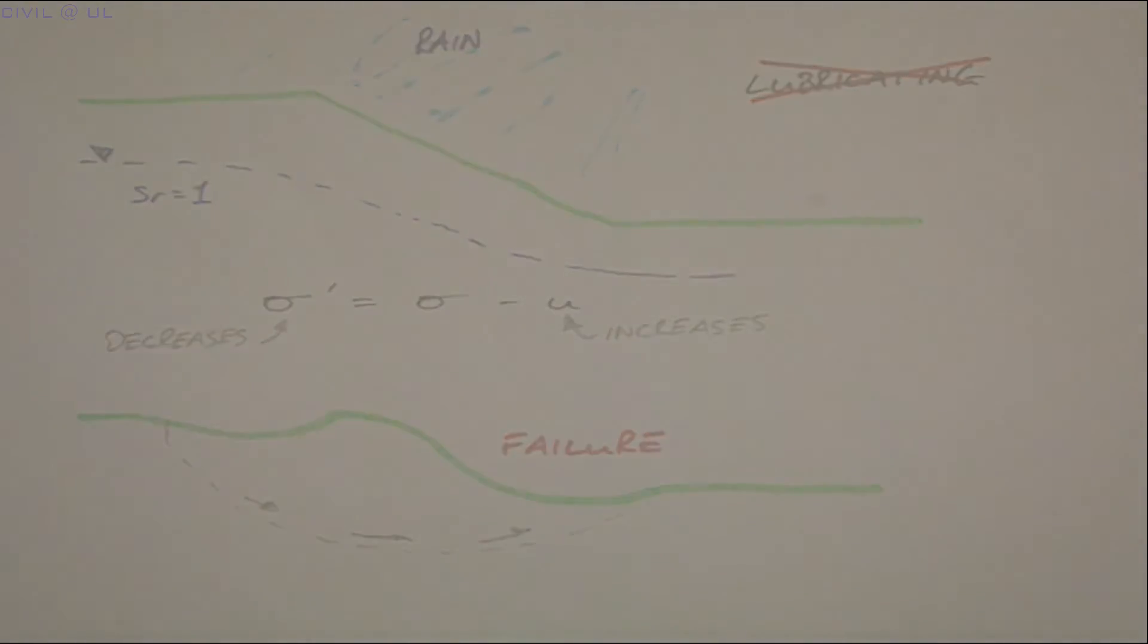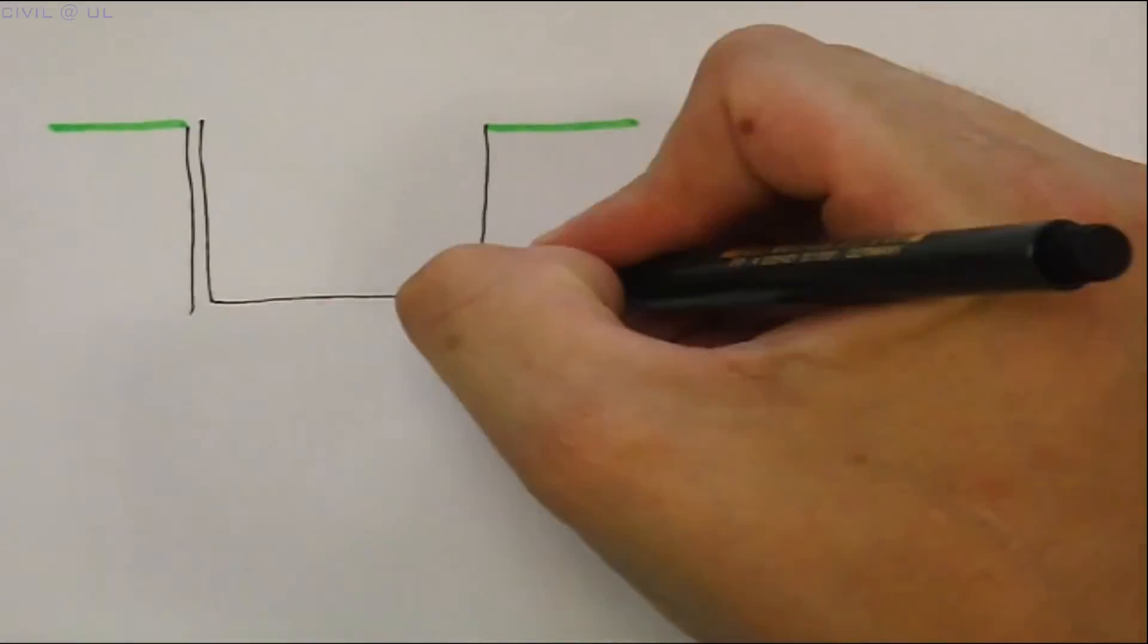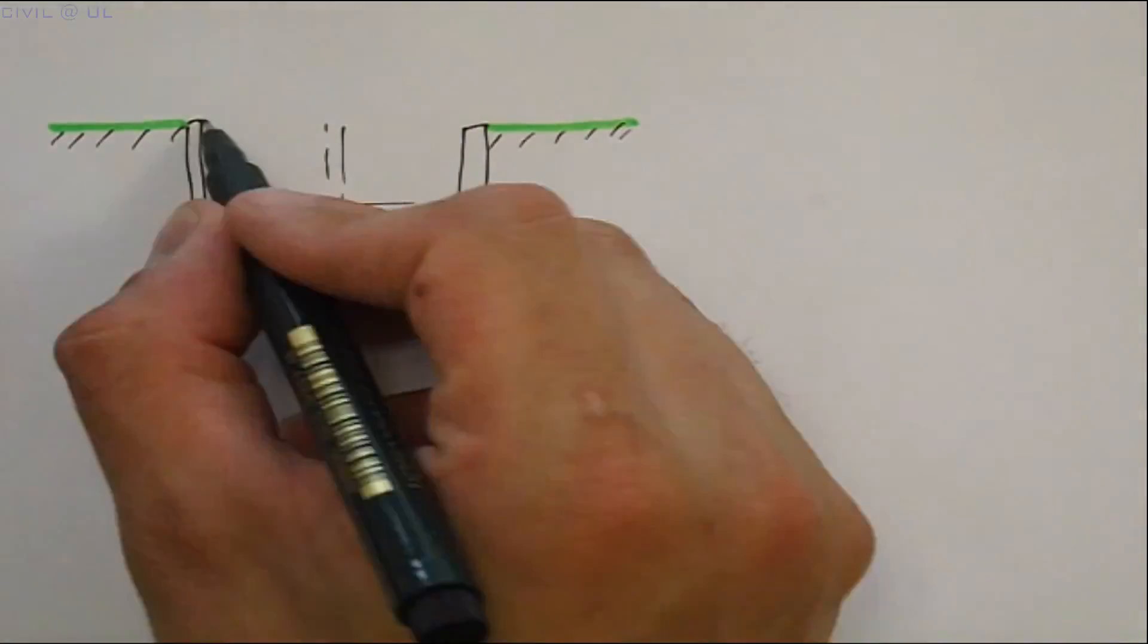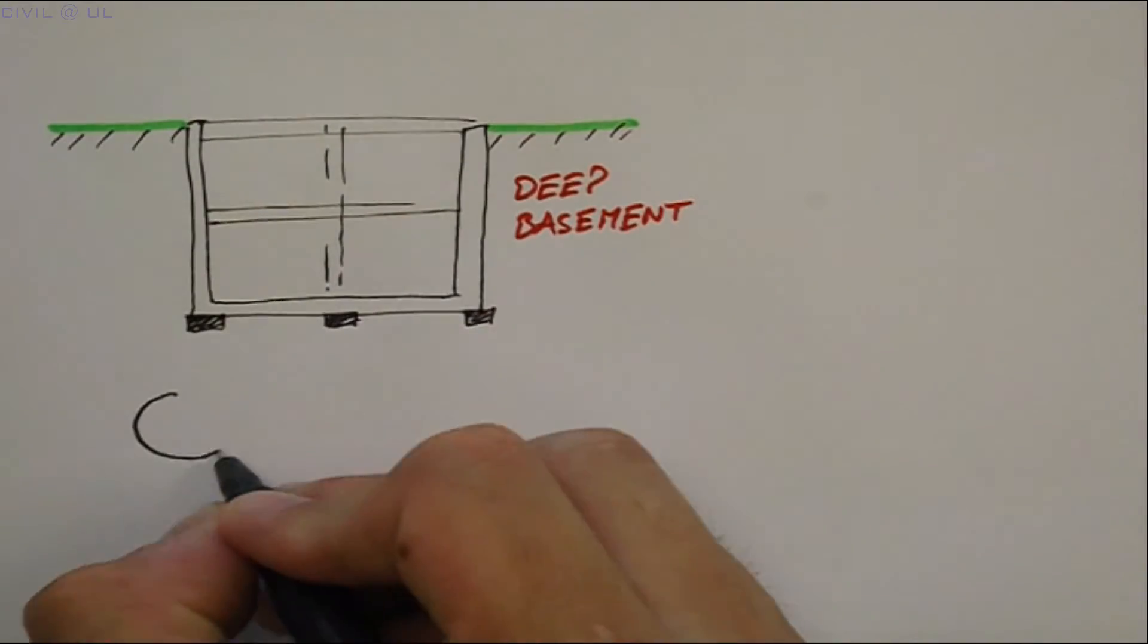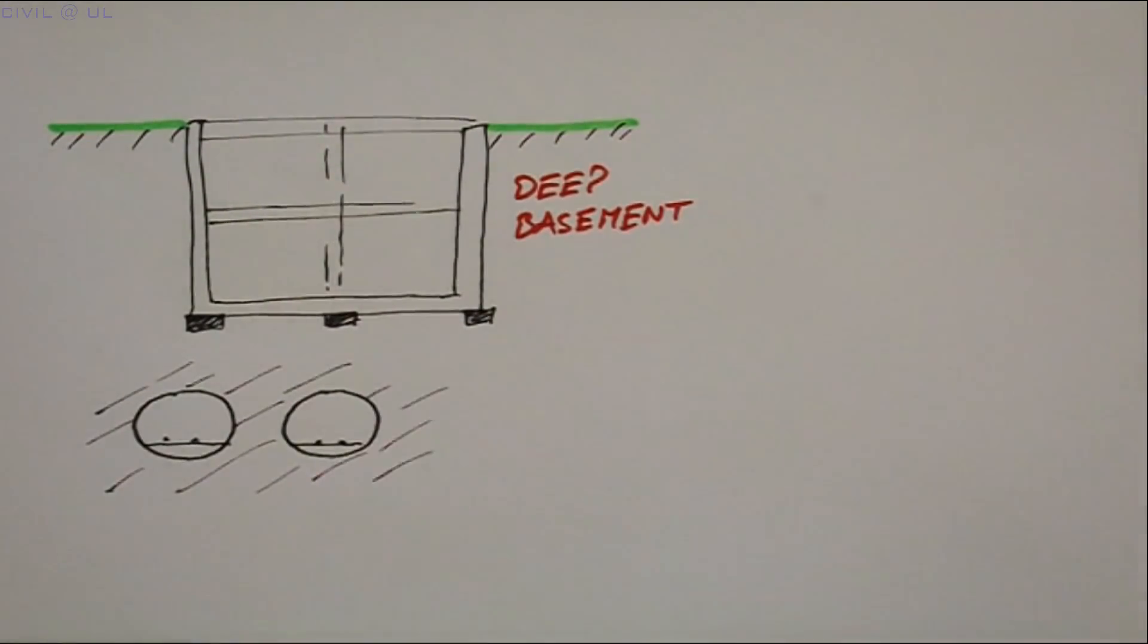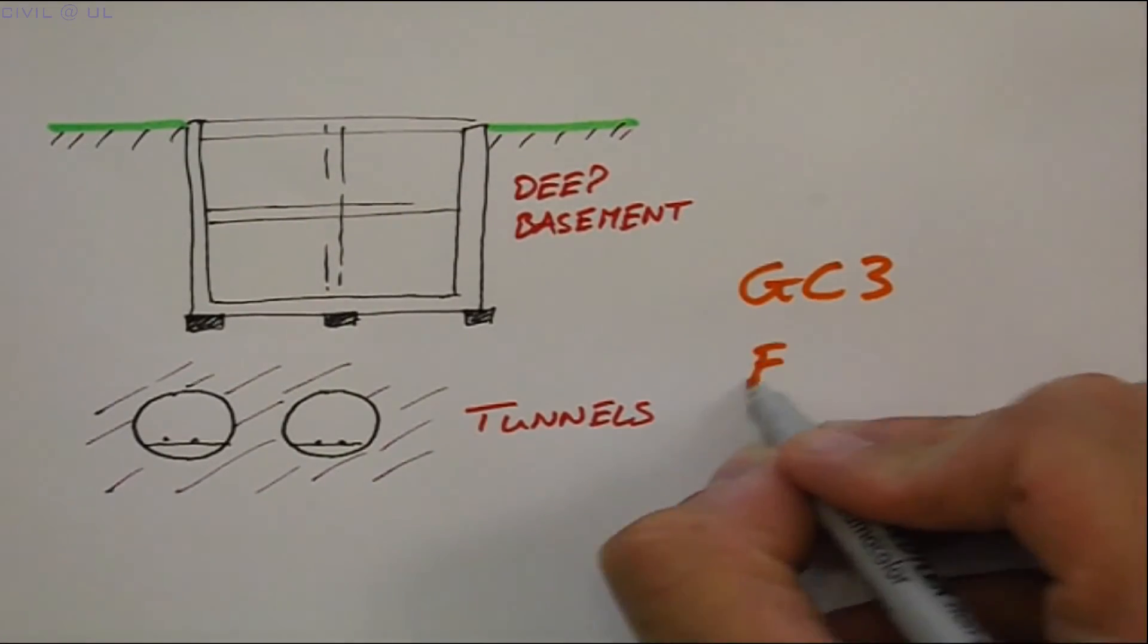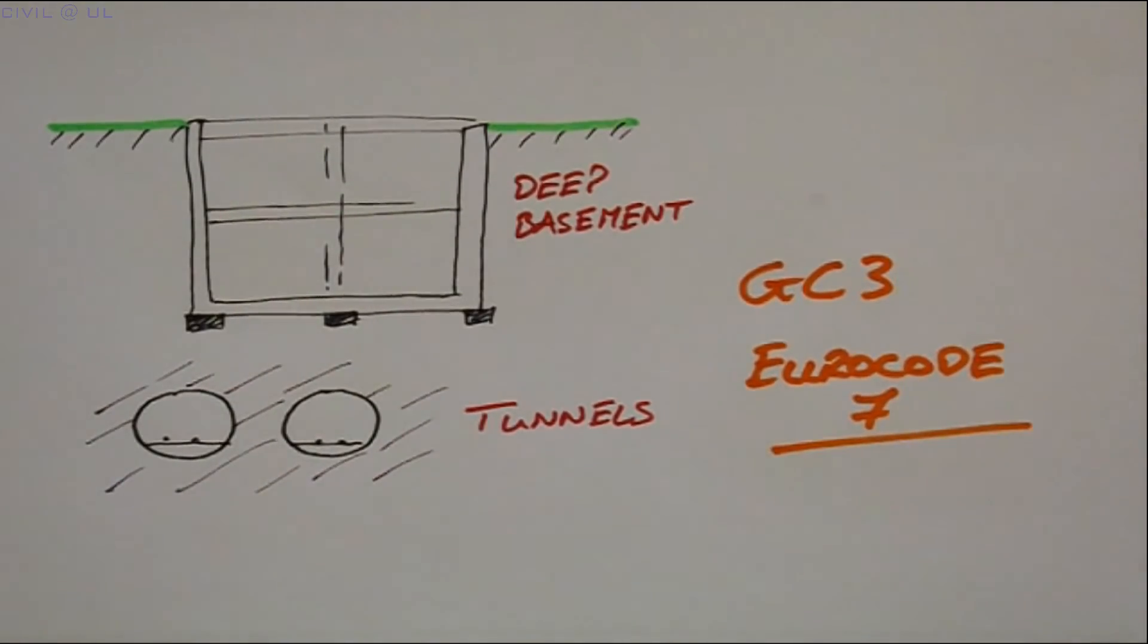For now, it is suffice to say that stress path sketching is a very useful tool for guiding the selection of appropriate strength tests to be performed when designing complex or non-standard geotechnical structures, such as those classified under Geotechnical Category 3 in Eurocode 7.